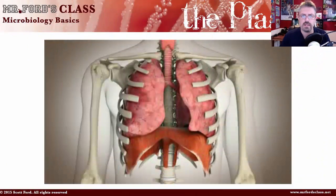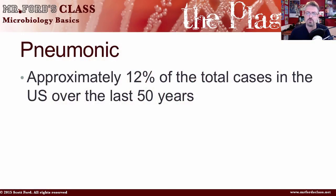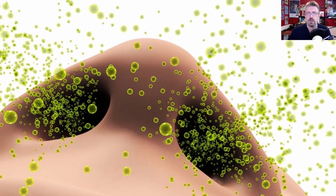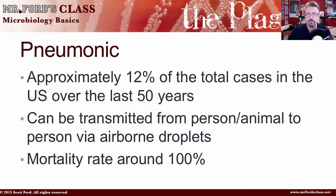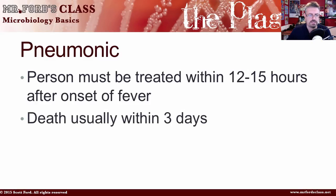The other variation is the pneumonic plague. Think pneumonia — this is about the lungs. Approximately 12% of total plague cases in the U.S. over the last 50 years have been this form. It can be transmitted from person to animal or person to person via airborne droplets — sneezing and coughing. So cover your mouth when you cough or sneeze, and wash hands frequently. The mortality rate is around 100%. Persons must be treated within 12 to 15 hours after the onset of fever, and death usually occurs within three days.